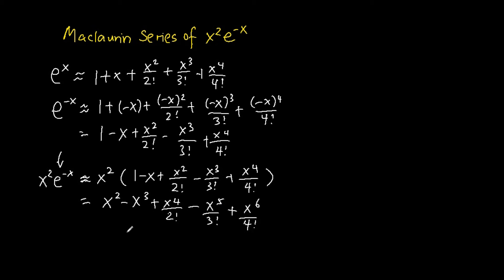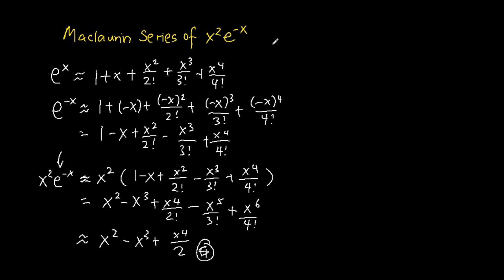Because we are only expressing the Maclaurin series up to and including the x to the power of 4 terms, the last two terms we can simply ignore. This is approximately x squared minus x cubed plus x to the power of 4 over 2. So this is the final answer to the Maclaurin series of x squared e to the power of negative x up to and including the x to the power of 4 terms.